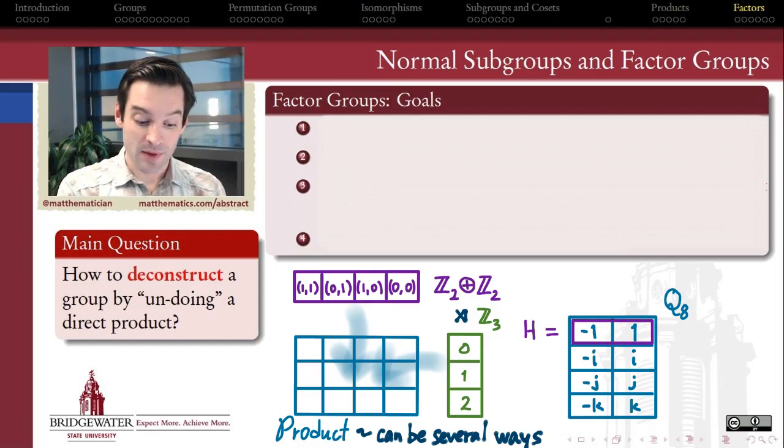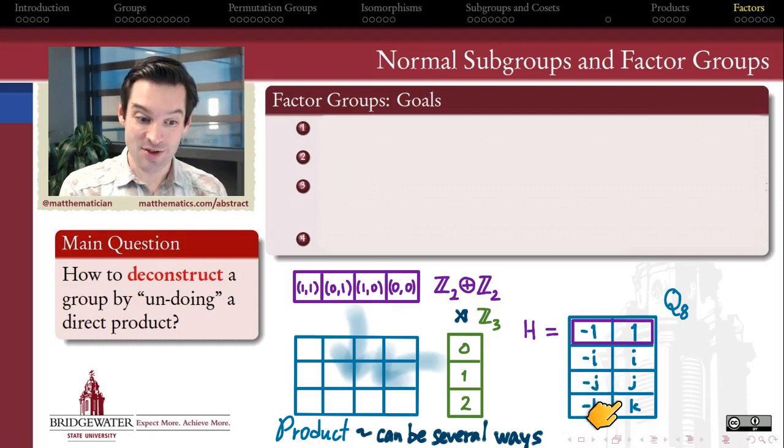For example, here's a group that we call the quaternion group of order 8. It consists of 1 and negative 1 with the usual arithmetic via multiplication that we would think of, and then three what we might call imaginary units i, j, and k, each of them whose square is equal to negative 1, and therefore also has its opposite. So this is a group under multiplication.